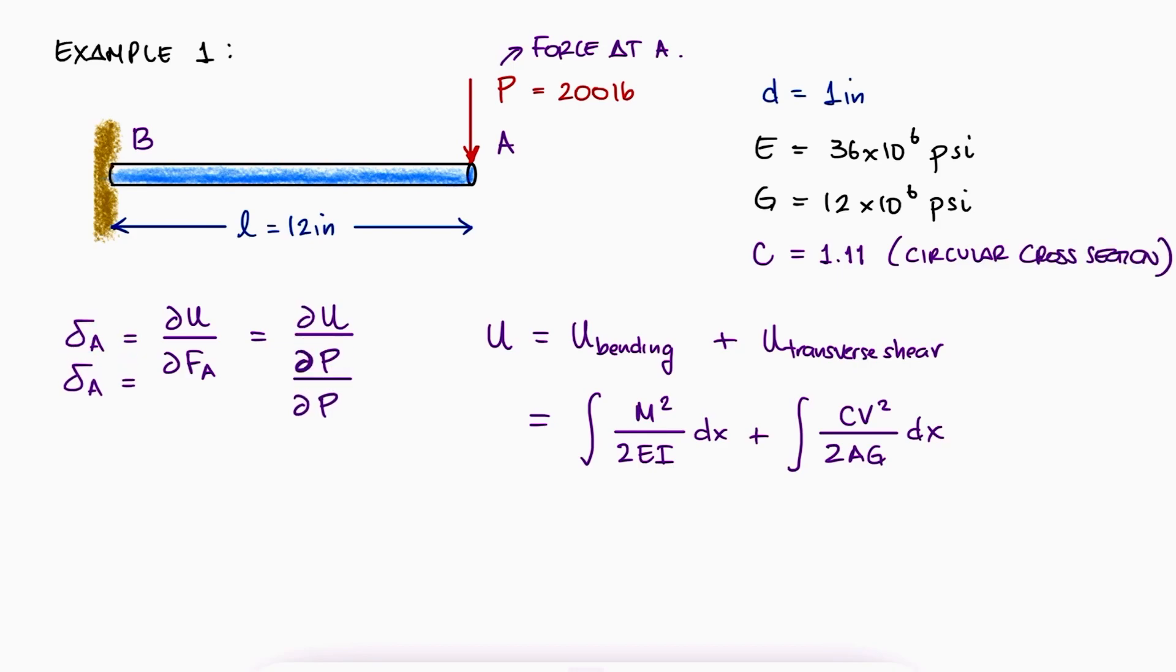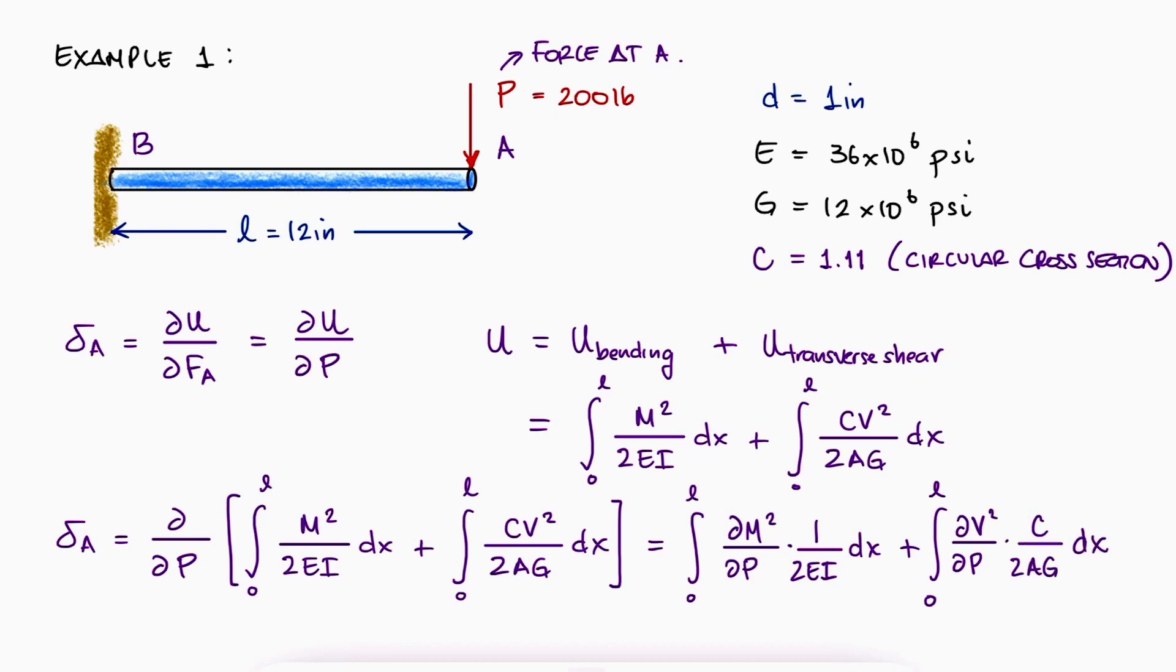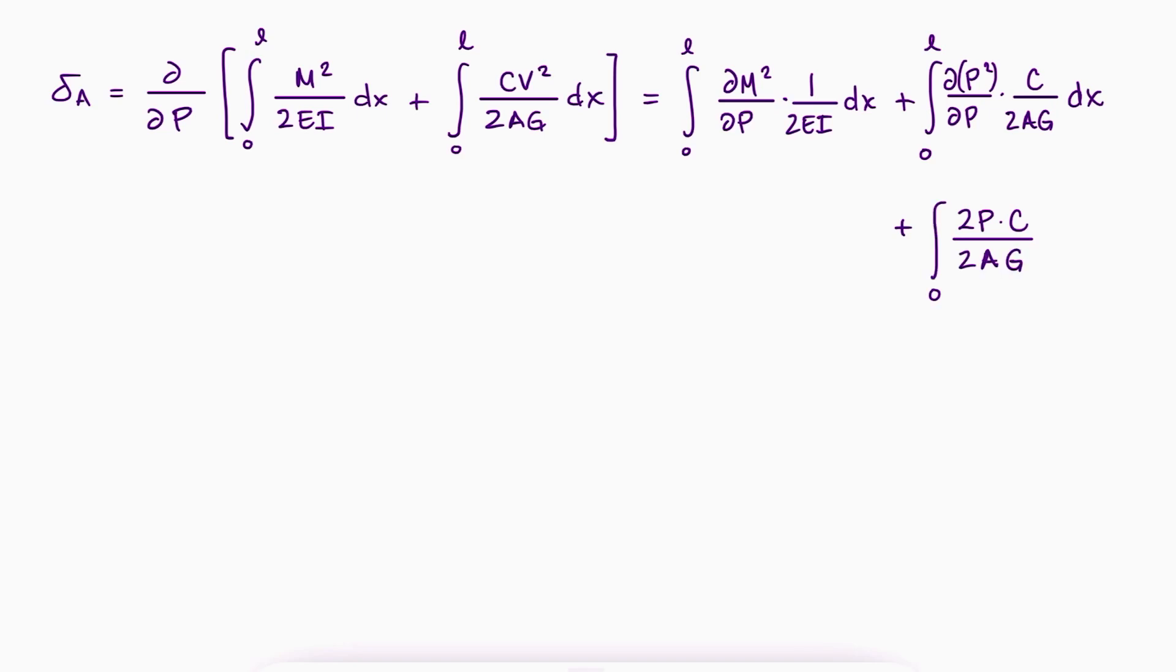We know that the deflection of A is therefore the partial derivative of the integrals with respect to the force, which is the same as the integral of the partial derivatives. Since the shear force V in the transverse shear energy term is the external load p, the second integral requires us to derive p squared, which results in 2p. The chain rule for the first integral would yield a 2m times partial of m with respect to p, and we see for both integrals that the 2's cancel out. Notice that the chain rule for the partial of p squared would yield a dp dp, and that's why we didn't write it in the first place.